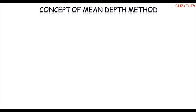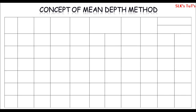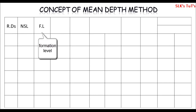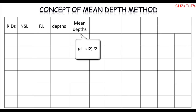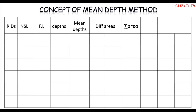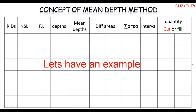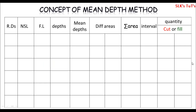The mean depth method calculation can be done in the given table. This table has columns for RDs, natural surface level, formation level, depth, mean depth — that's why this table is known as the mean depth table — and then different areas, the summation of areas, then the interval or length, and then the quantities in the form of cut or fill. For better understanding, we will give a solution to a problem as we always do.